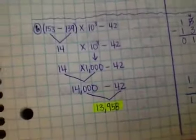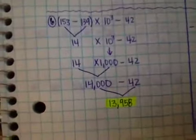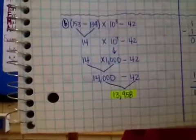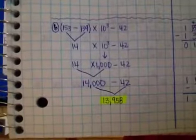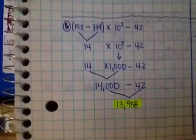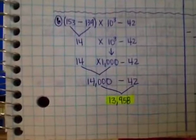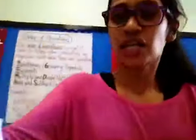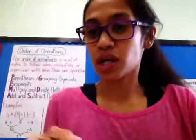Moving on to number six — my answer is 13,958. On your work side I want you to show how you subtracted, how you did your exponent, how you multiplied, and how you subtracted at the end.